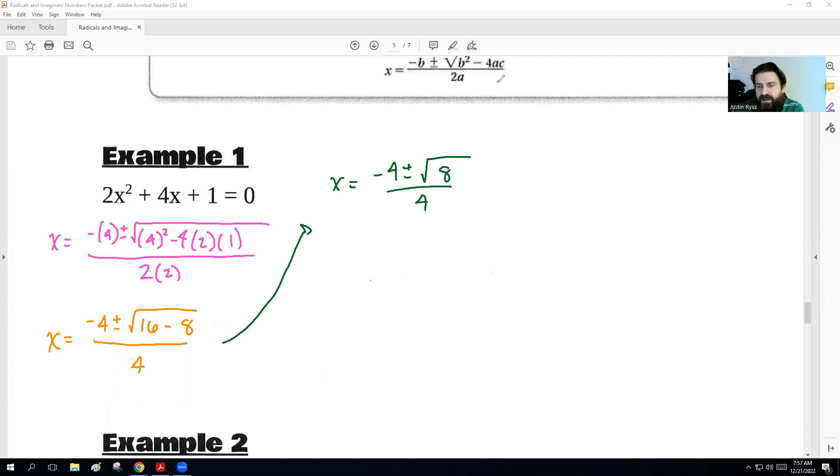So what we would typically do after this was before we would just take the square root of 8 and we'd get like 2 point whatever something. And we'd write that number down and get a decimal. Well, to get an exact solution, what we're going to do is just break down the square root. So I kind of like using prime factorization here. Okay, 8 is 4 times 2. And then 4 is 2 times 2.